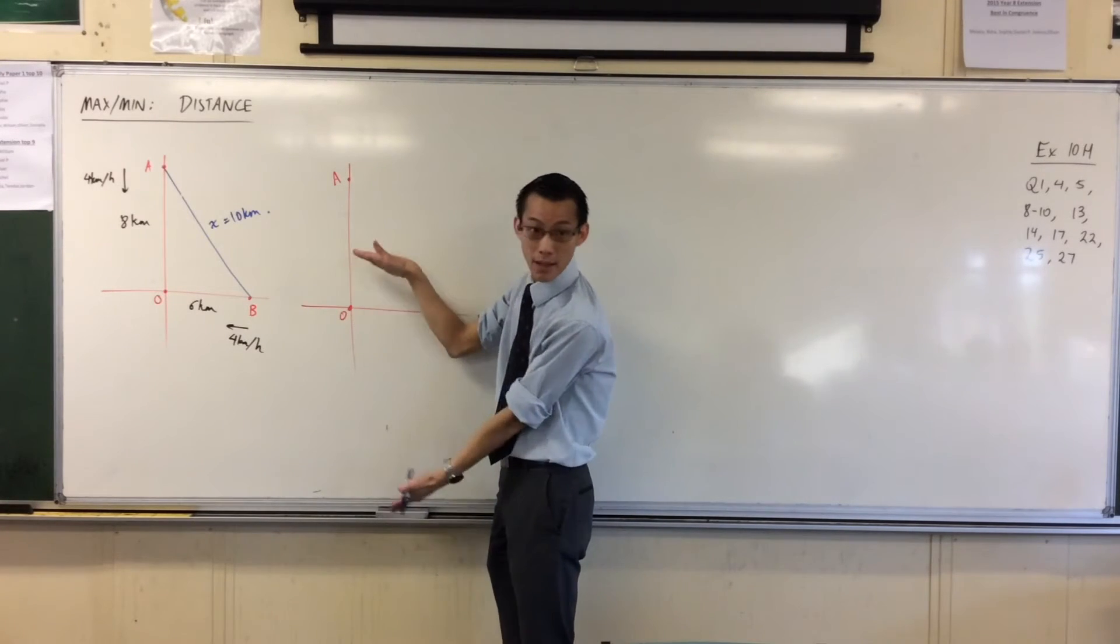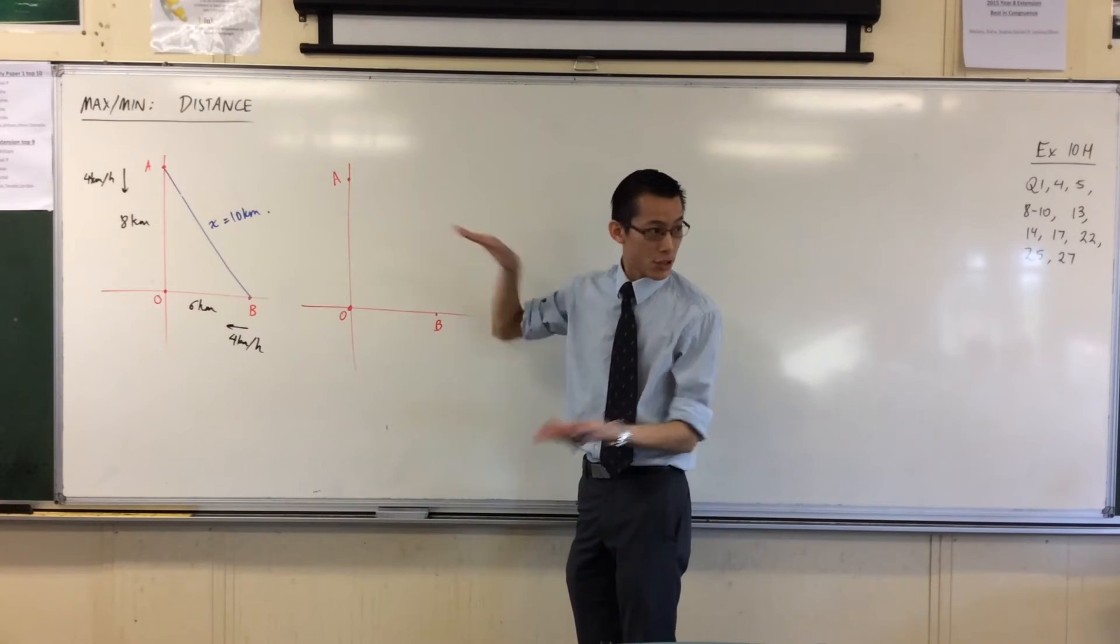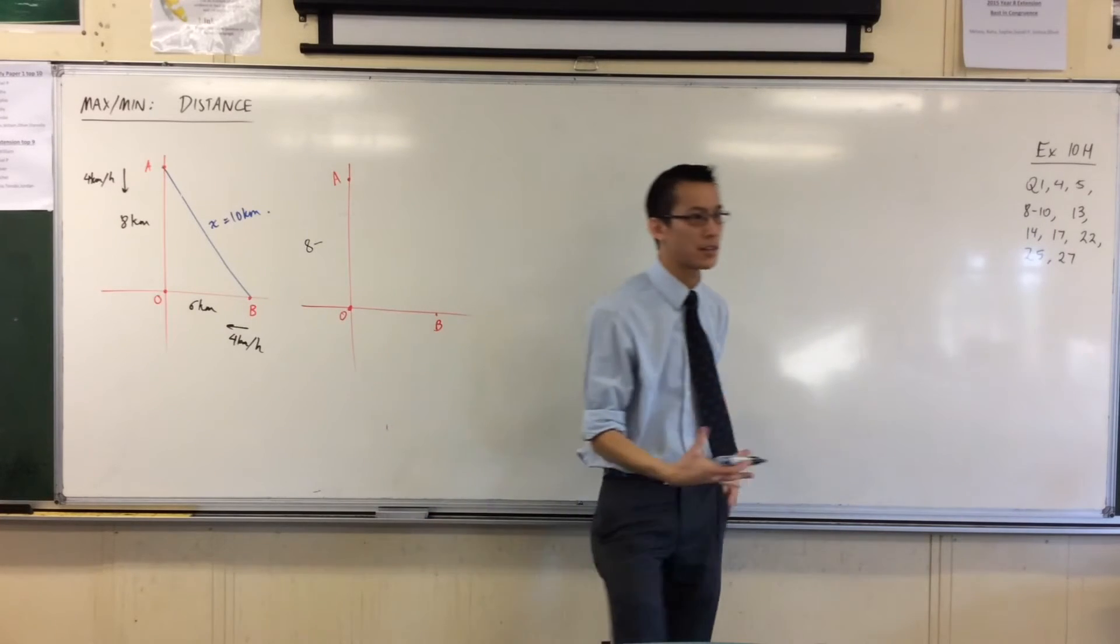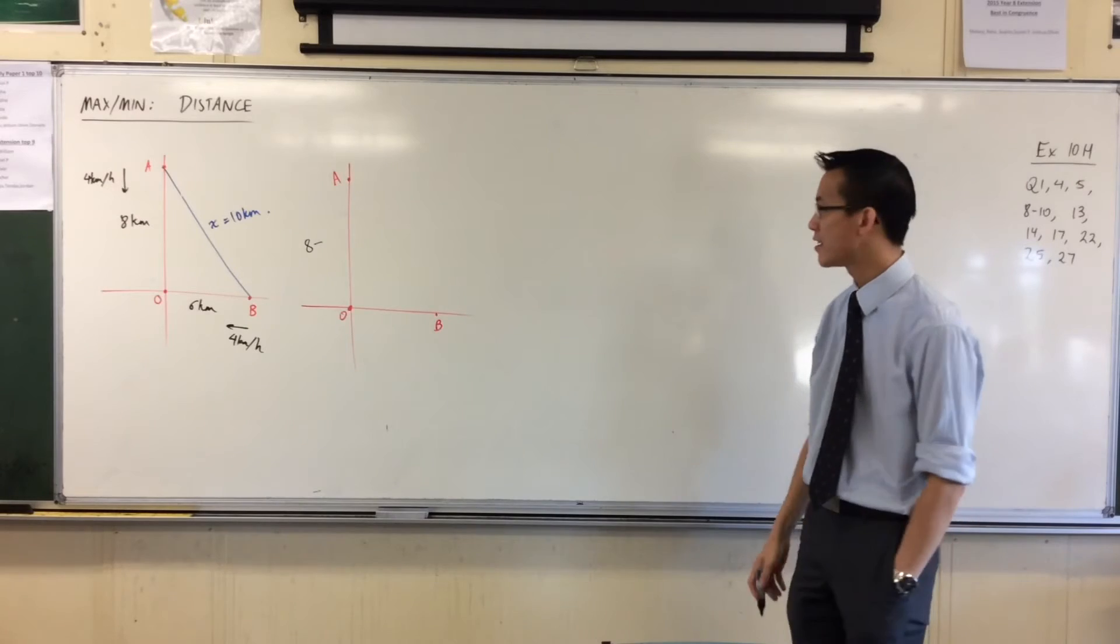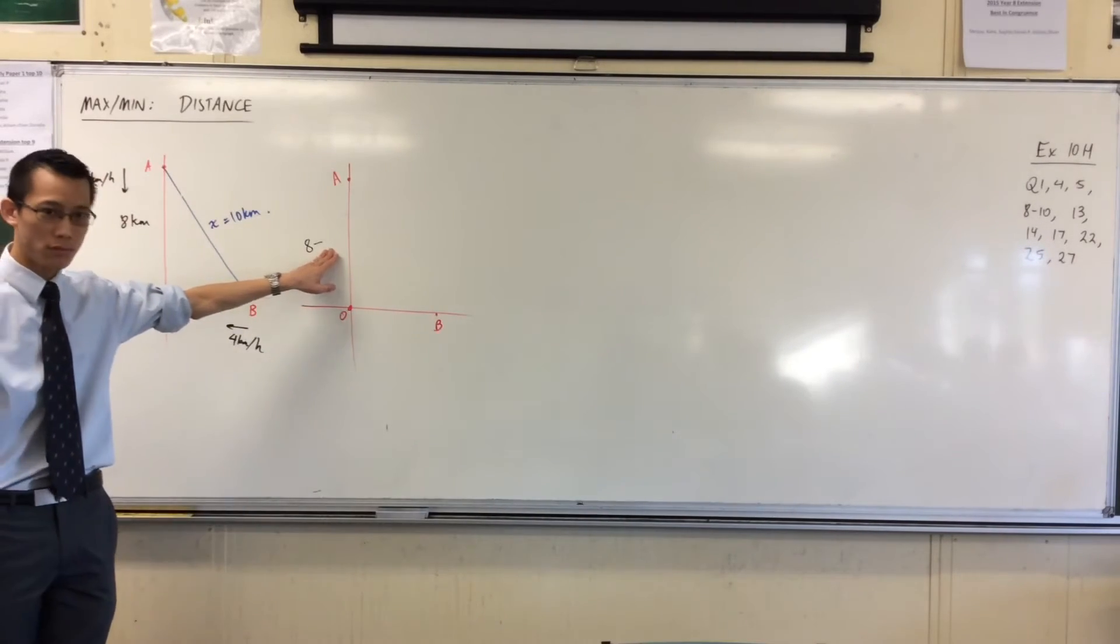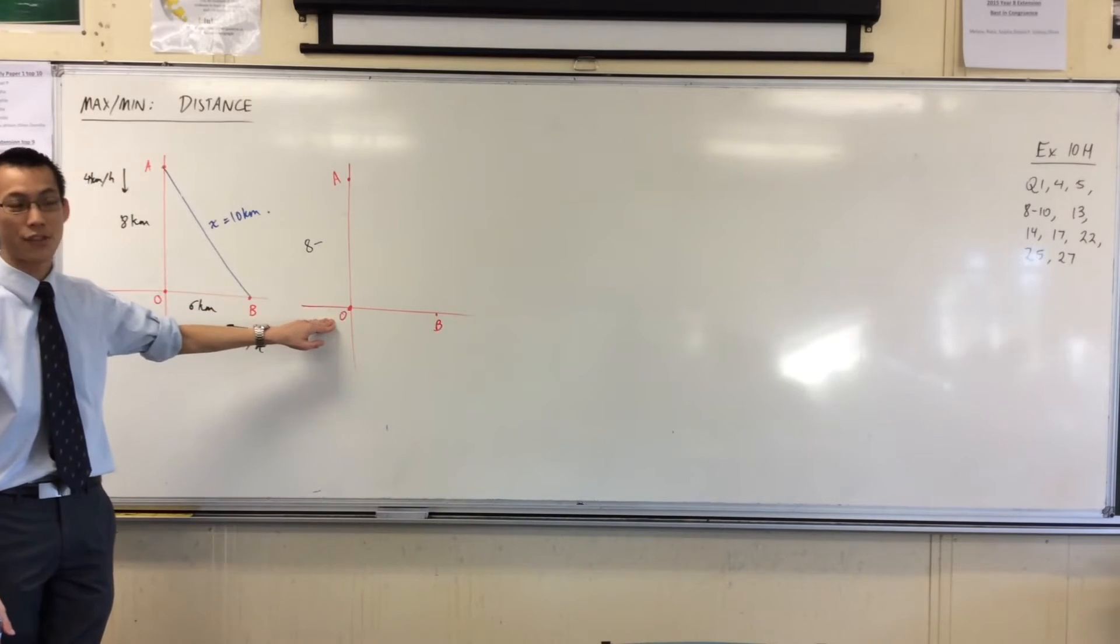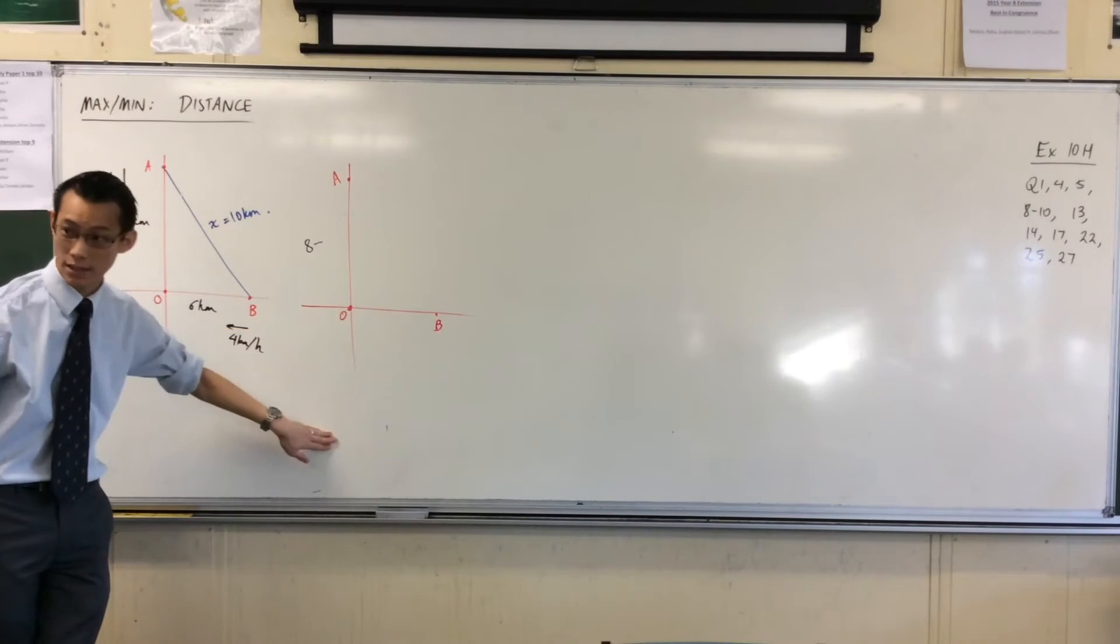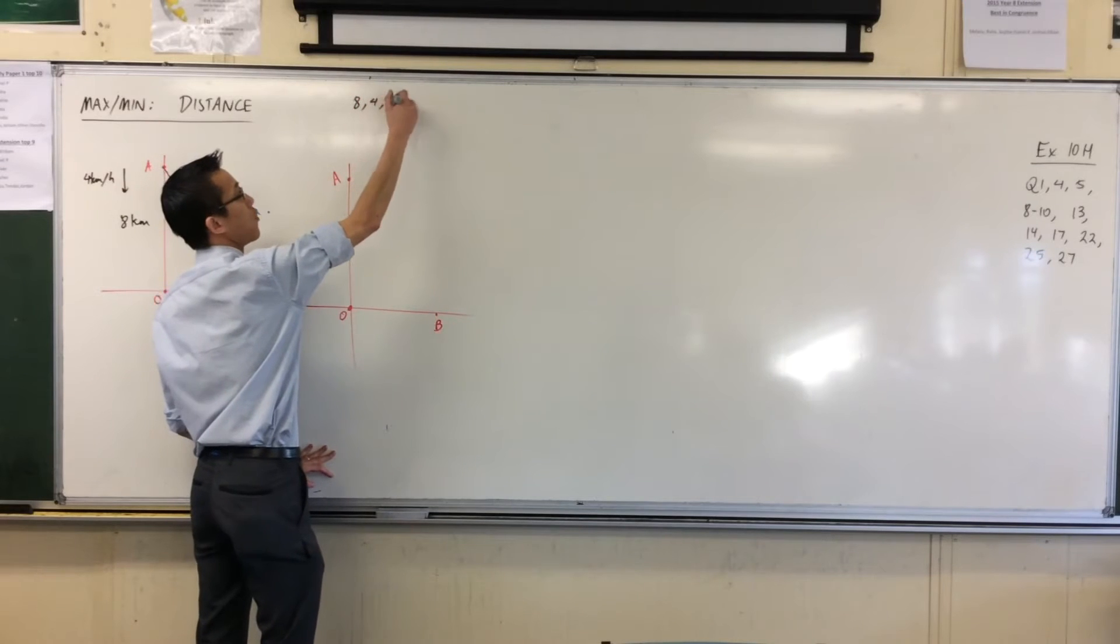Therefore, remembering that this thing is changing and getting smaller—at least for a while, eventually it will get bigger—this starts at 8 and it drops, it reduces by some amount. The amount increases as time increases. After the first hour it should be 4, then after the second hour it should be 0, then after the third hour it'll be negative 4 in this direction, then negative 8, and so on.